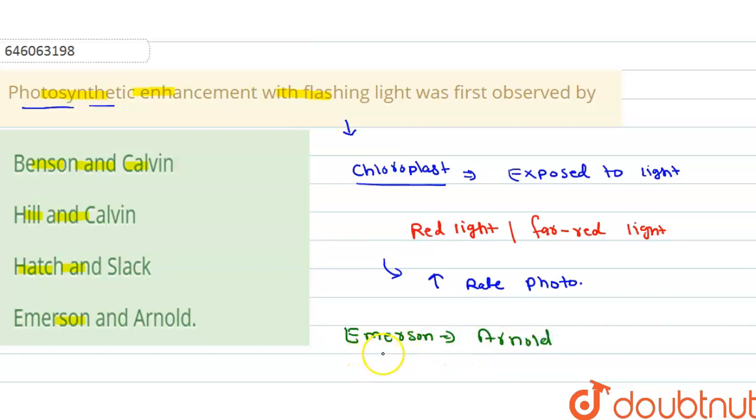We can say that enhancement effect was discovered by Emerson and Arnold. So the right answer is option 4.